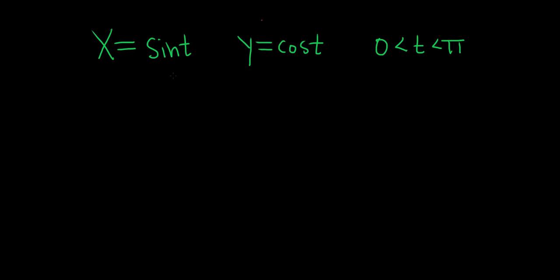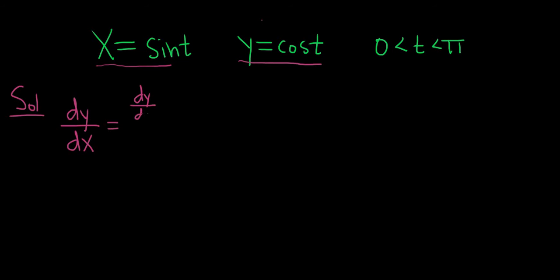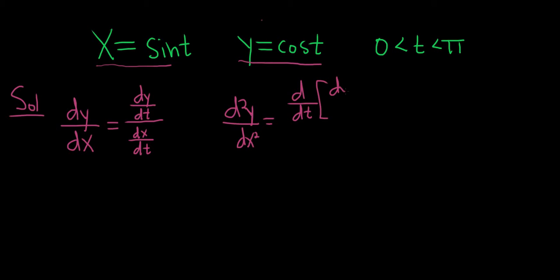In this problem, we have to find the open t intervals where the graph of these parametric equations is concave up and concave down. In order to do that, we have to find the second derivative and figure out where it's positive, which will tell us where it's concave up, and negative, which will tell us where it's concave down. The first derivative is dy/dx = (dy/dt) / (dx/dt), and the second derivative is d/dt of dy/dx, all over dx/dt.